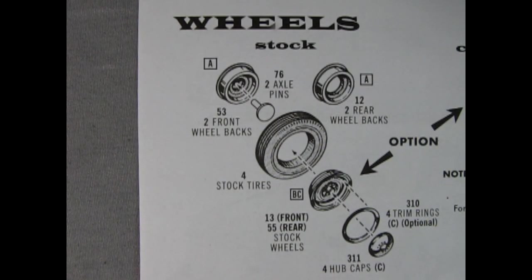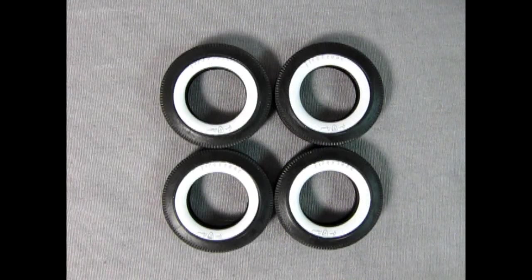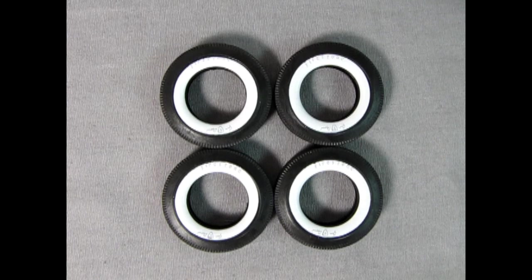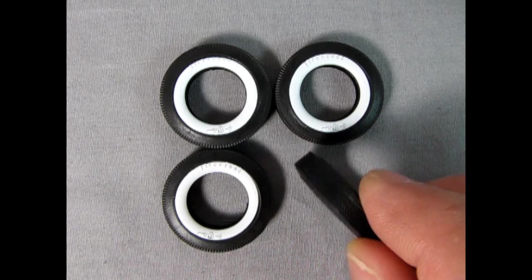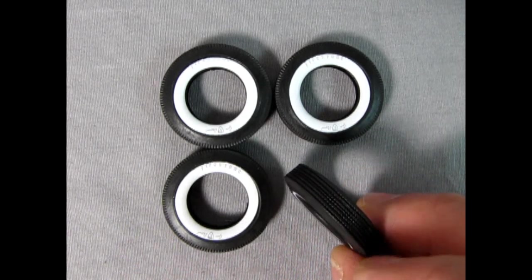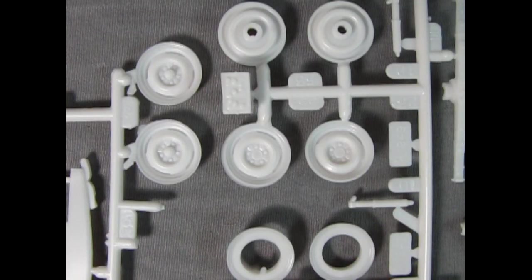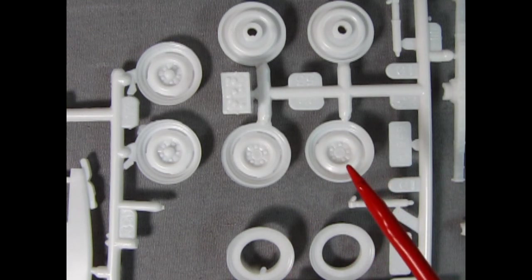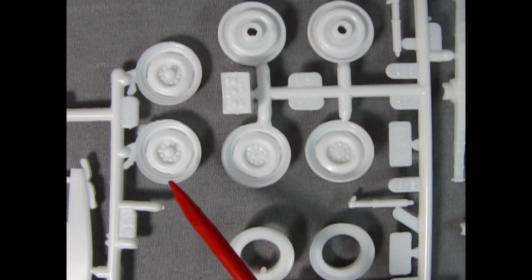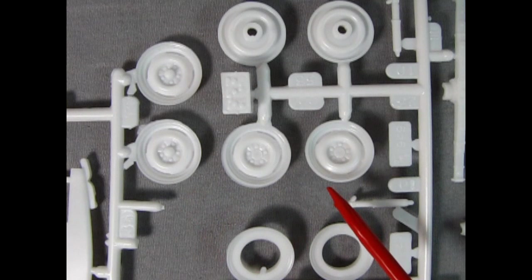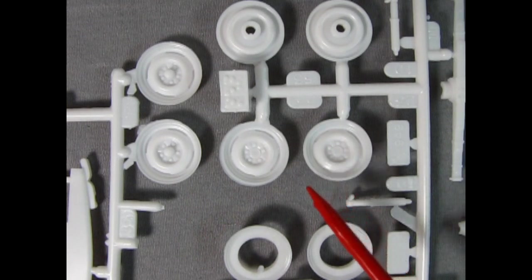First, we have the factory stock build. This option captures the original look of the 1949 coupe featuring stock steel wheels, chrome trim rings and authentic Ford hubcaps. The tires are 1950s era wide white walls from Firestone adding a touch of nostalgic charm. The tread pattern is also improved featuring a tighter, more scaled tread. The attention to detail on the stock wheels is exceptional with accurate shapes and the correct number of wheel lugs. The front wheels even showcase the wheel bearing cap while the rear wheels accurately depict their absence just like the real car.